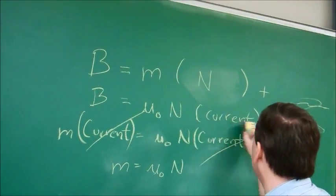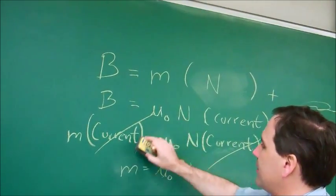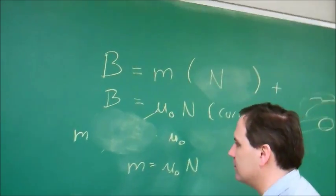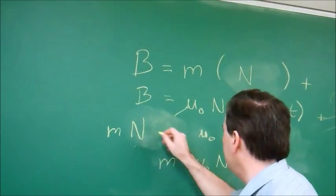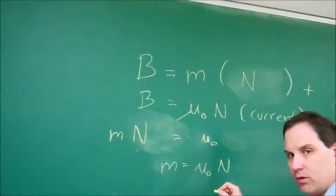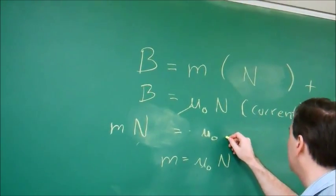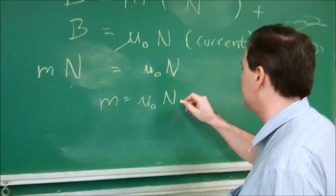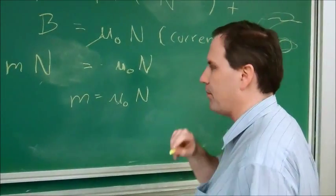Alright? This is still the case, and then when we set them equal, we get this. m times N is equal to mu zero N times current, and the currents drop out.